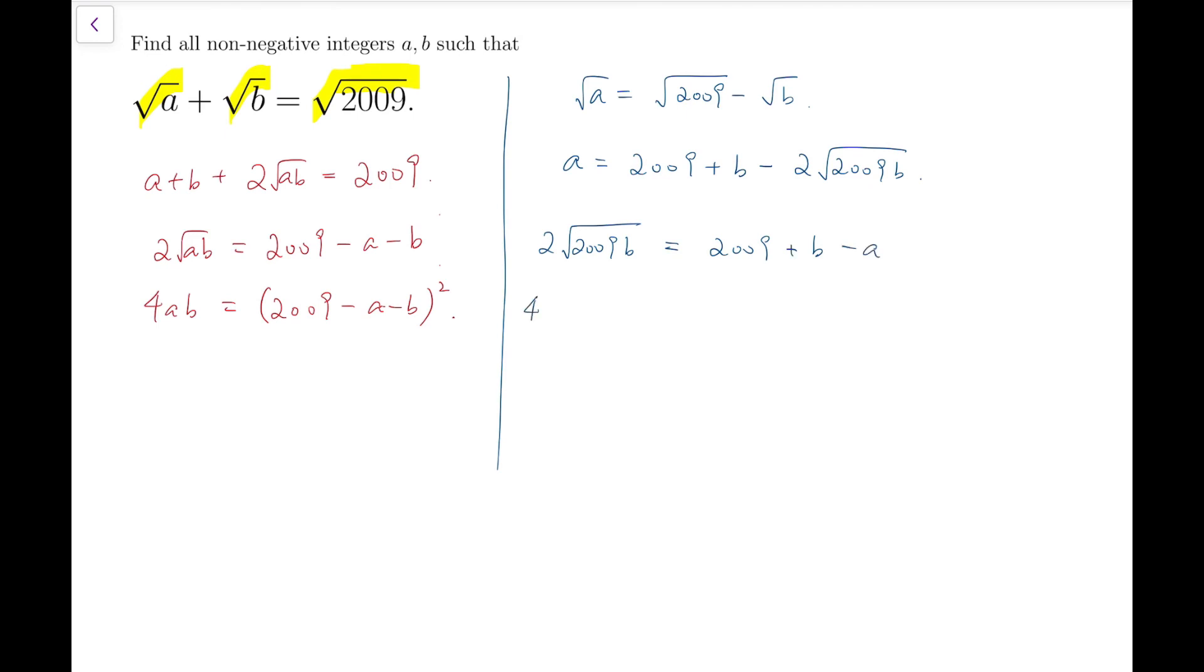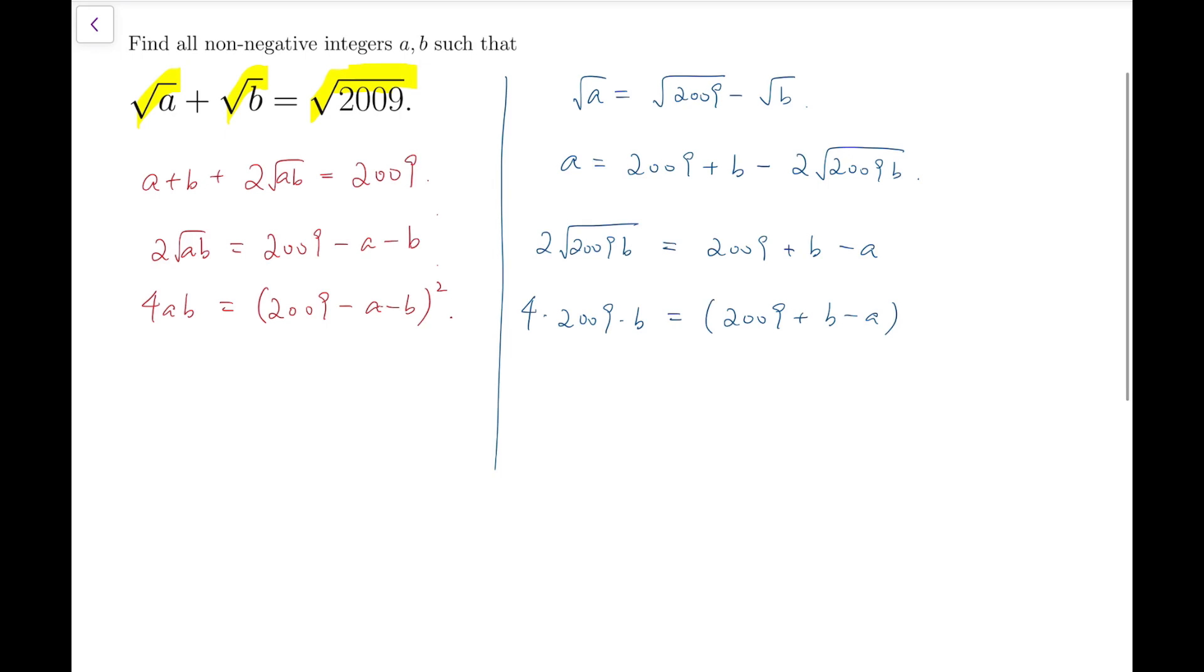Square both sides. 4 times 2009 times b equals (2009 plus b minus a) whole squared. So we know that this term is a perfect square. Because a and b are supposed to be non-negative integers, this part 2009 plus b minus a is an integer, and so the square of that is a perfect square. So that means the term highlighted in yellow should also be a perfect square as well.